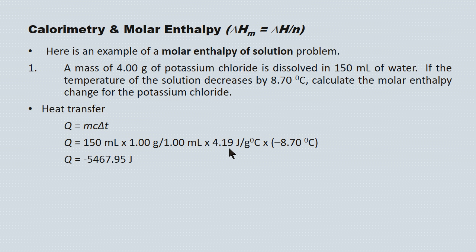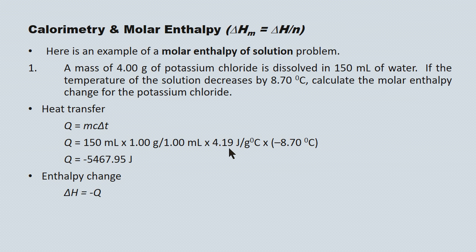Here's our value for heat transfer: negative 5467.95 joules. Intuitively it makes sense — we're dealing with a drop in temperature of the surrounding water, so we should have a negative value. Energy is going into the potassium chloride to break its bonds. The enthalpy change is equal and opposite to the energy change of the surroundings, so the enthalpy change of the potassium chloride is positive 5467.95 joules.